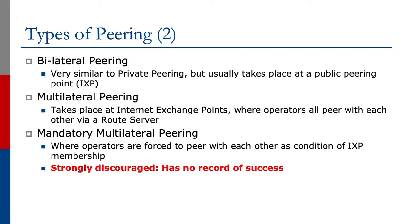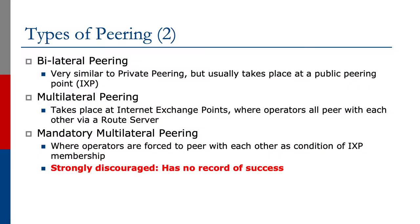Mandatory multilateral peering is strongly discouraged. It has no record of success. There are one or two places in the world where the exchange point and its members have agreed on a mandatory multilateral peering policy, and this works for them in their particular circumstances. But the vast experience around the globe has shown that bilateral peering and multilateral peering are the most successful types of peering taking place at internet exchange points.